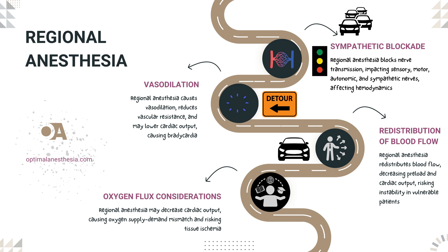Now let's think about how this affects blood flow, or traffic, through the rest of the city. When we block off major roads in specific areas, blood gets rerouted to other parts of the body. This redistribution of blood flow happens due to vasodilation in the areas where we've blocked sympathetic nerves. However, this also means that less blood is returning to the heart — preload — leading to a decrease in overall traffic volume, or cardiac output. For our elderly patients or those with pre-existing cardiovascular conditions, this can be particularly significant. Their bodies may not be as effective at rerouting blood flow, so the usual compensatory mechanisms are blunted, and they can experience more pronounced drops in blood pressure and cardiac output.